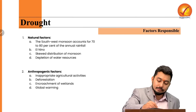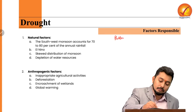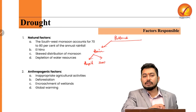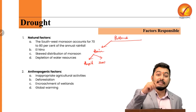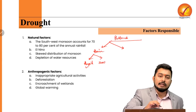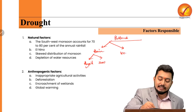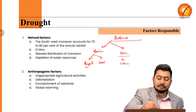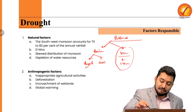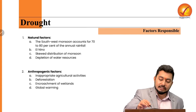The changing monsoon patterns show that rain is either too rapid or too slow — extreme in both directions. Regions where we expected 100 cm of rain are getting 170 cm, while regions that used to get heavy rainfall are receiving less. These changing patterns are due to global warming and climate change. There is also the depletion of water resources — per capita water availability has been continuously declining since the 1950s.